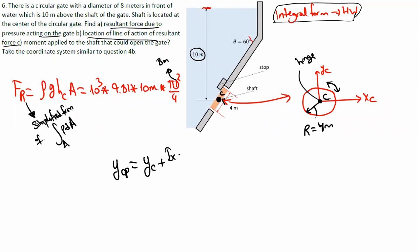For ycp I'll again use: ycp = yc + Ixxc / (yc × area). For this question you'll need the second moment of area of the circle. You can find yc which is 10 meters, but notice that instead of 10 meters we'll use the inclined version - the y coordinate - because the gate is inclined.